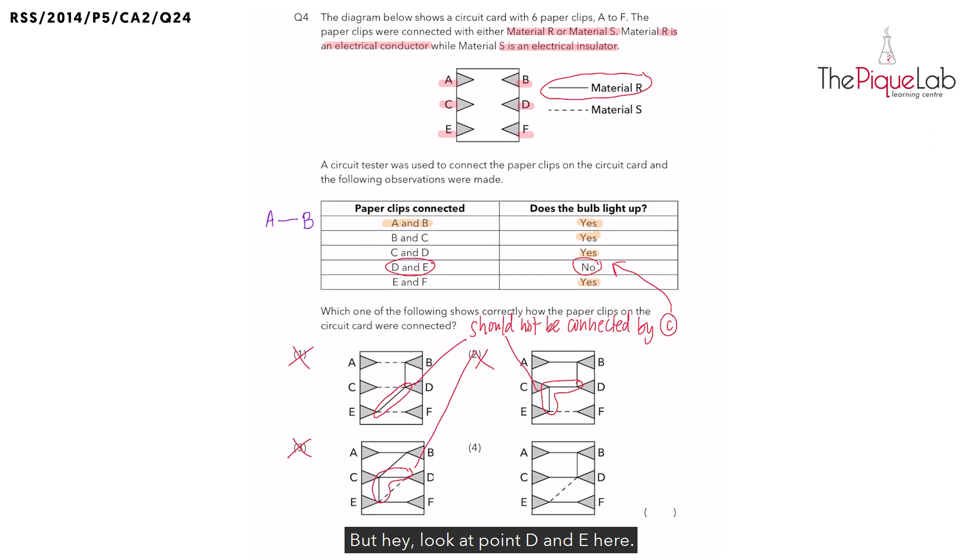But hey, look at point D and E here. There is a connection. But if you look carefully, it is a dotted line. And the dotted line represents material S which is an insulator of electricity.